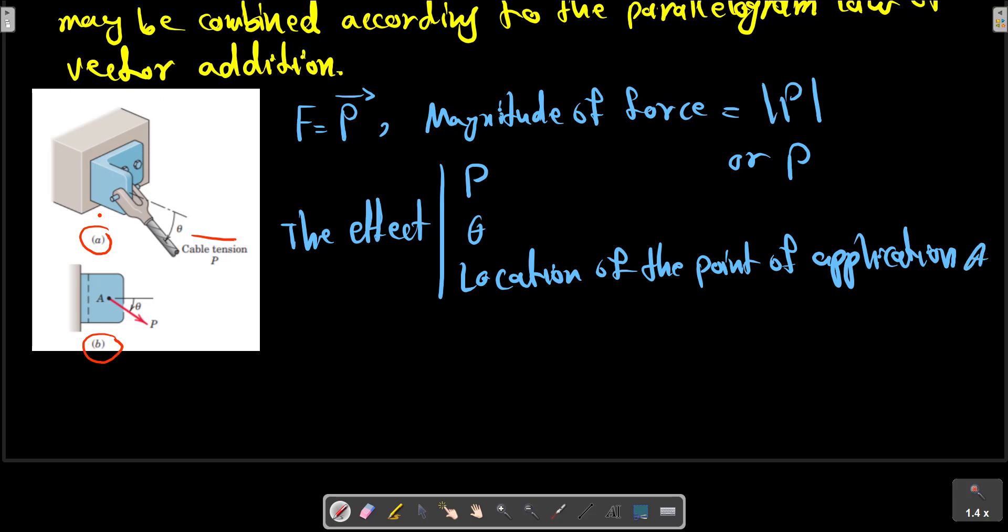This figure shows that changing any of these three specifications will alter the effect on the bracket, such as the force in one of the bolts which secure the bracket to the base, or the internal force and deformation in the material of the bracket at any point. Thus the complete specification of the action of a force must include its magnitude, direction, and point of application.